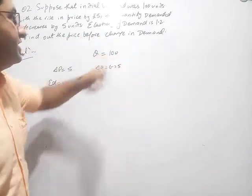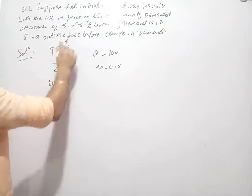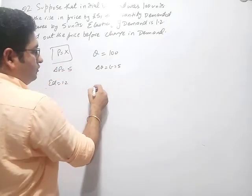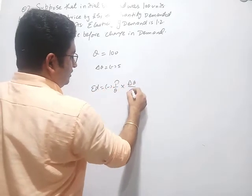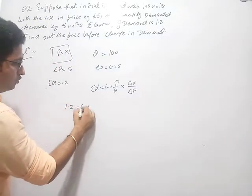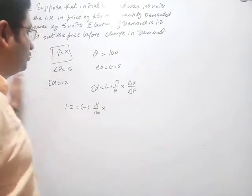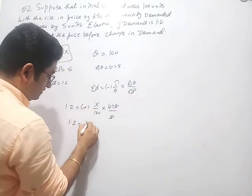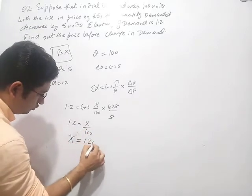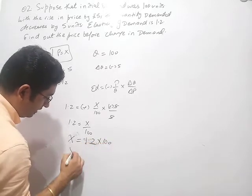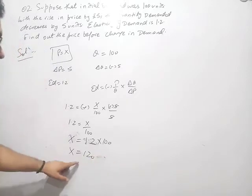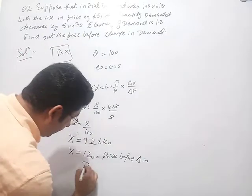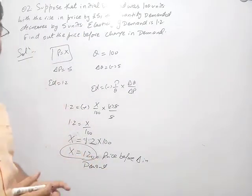We have to find out the original price. Let us assume that P is equal to X. Now let us directly put these values into the formula. ED equals minus of P upon Q into change in Q upon change in P. So 1.2 equals minus of X upon 100 into minus 5 upon 5. This simplifies to 1.2 equals X upon 100. Therefore X equals 1.2 into 100, so X equals 120. The price before change in demand is Rs. 120.